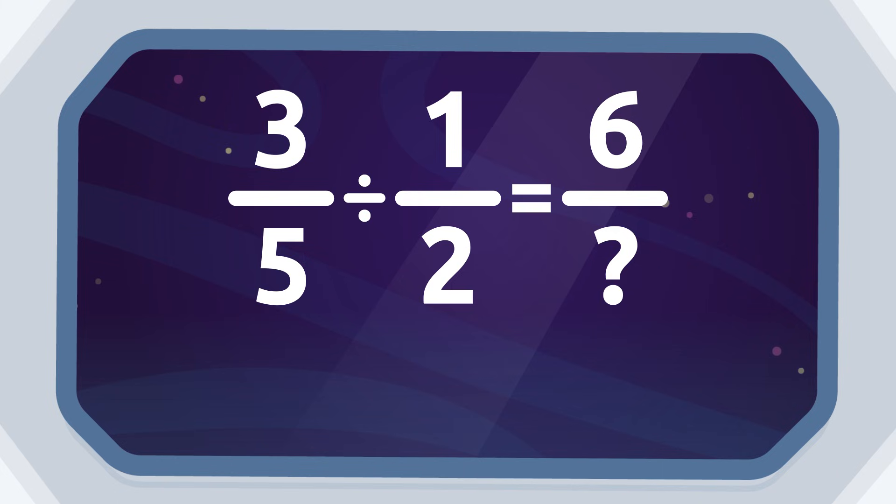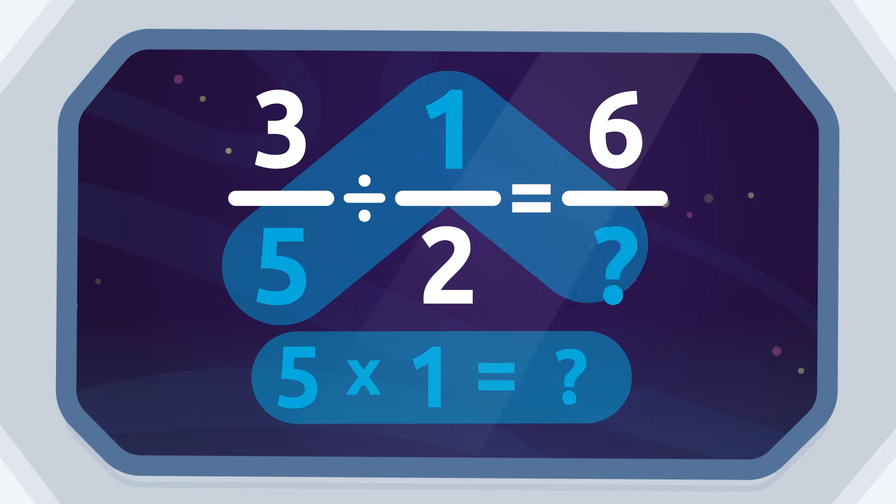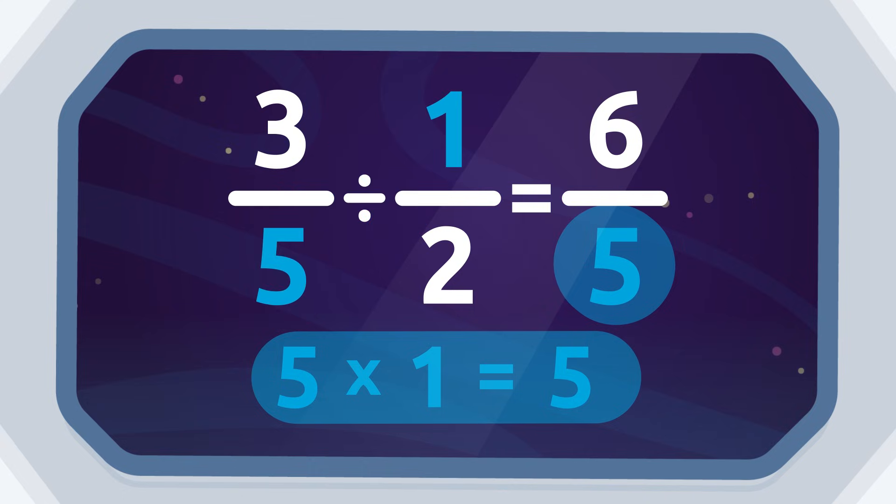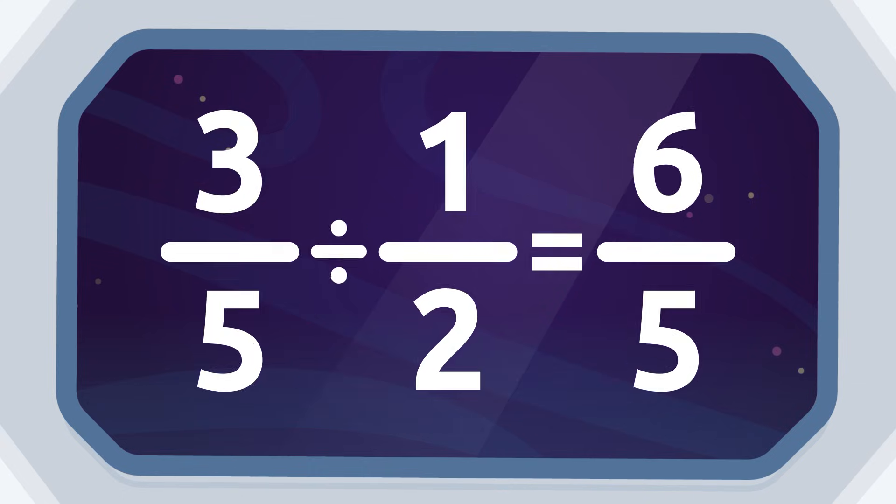Now to find the denominator of the product, we multiply the denominator of the first fraction by the numerator of the second fraction, meaning five by one, which equals five. The denominator of the product is five. So three-fifths divided by one-half equals six-fifths. Excellent!